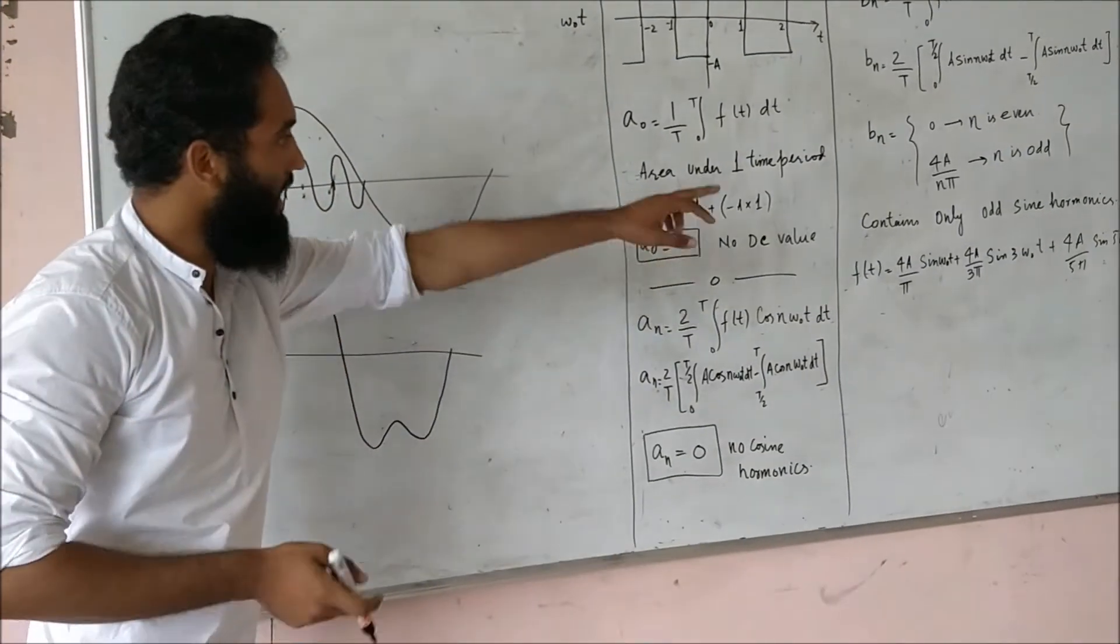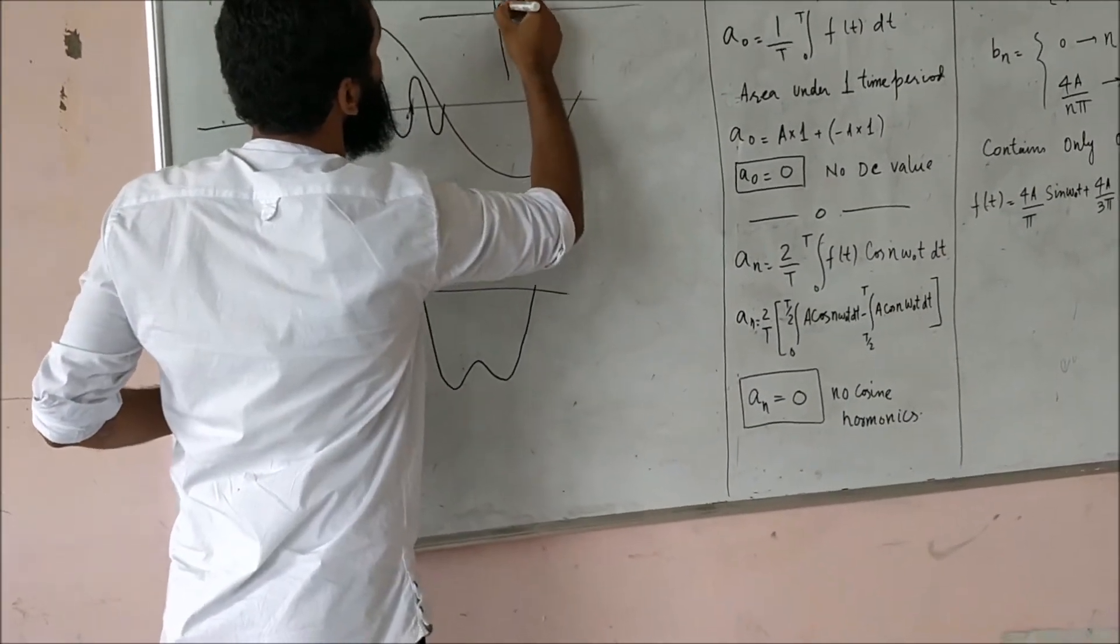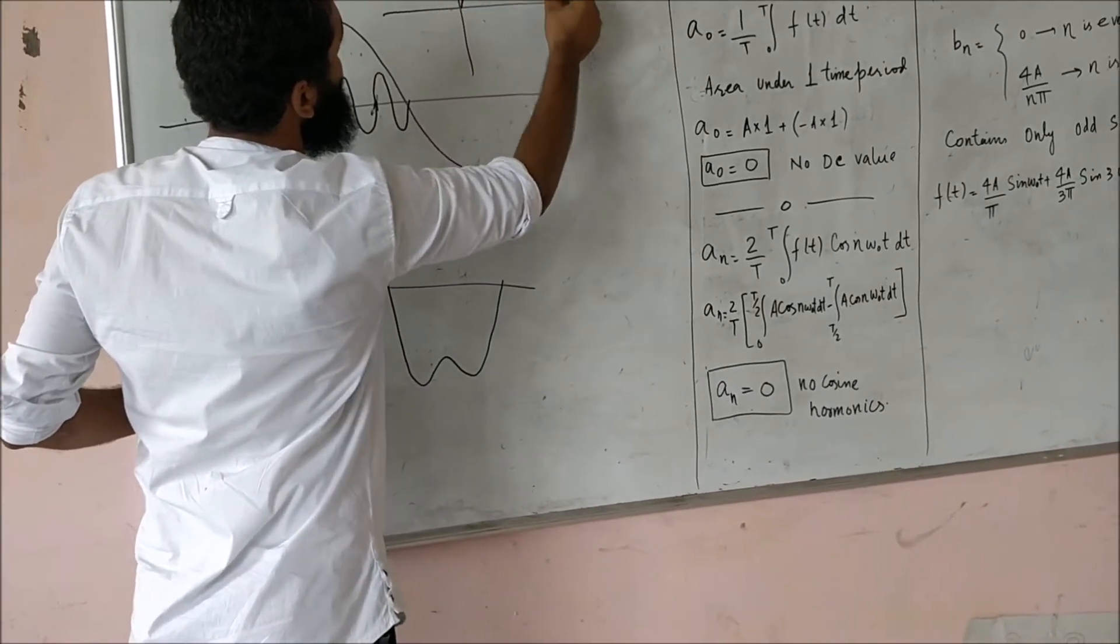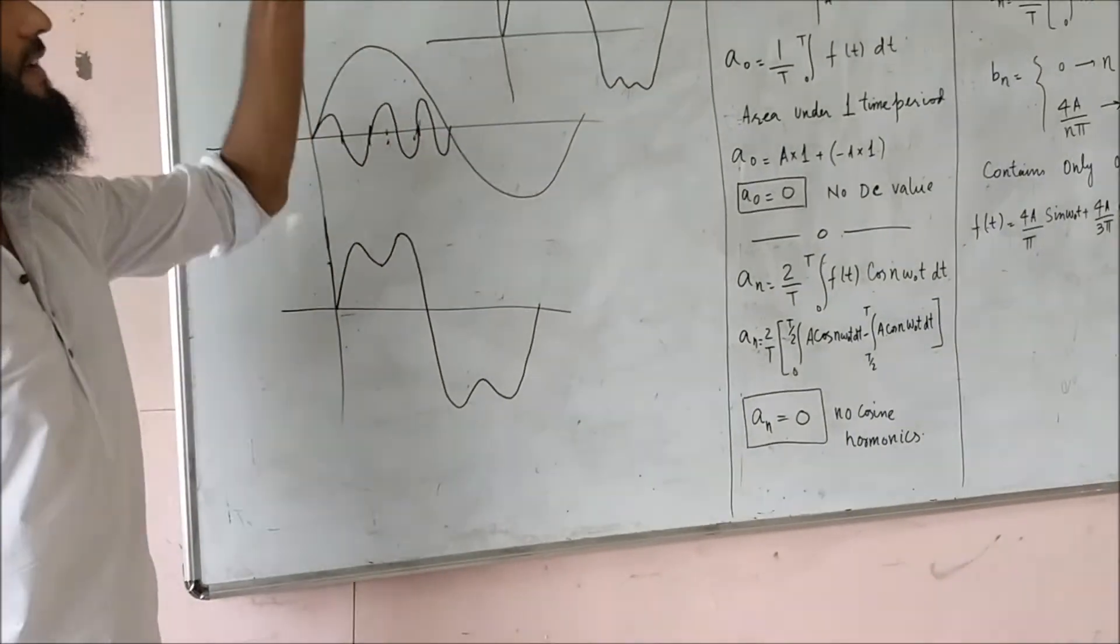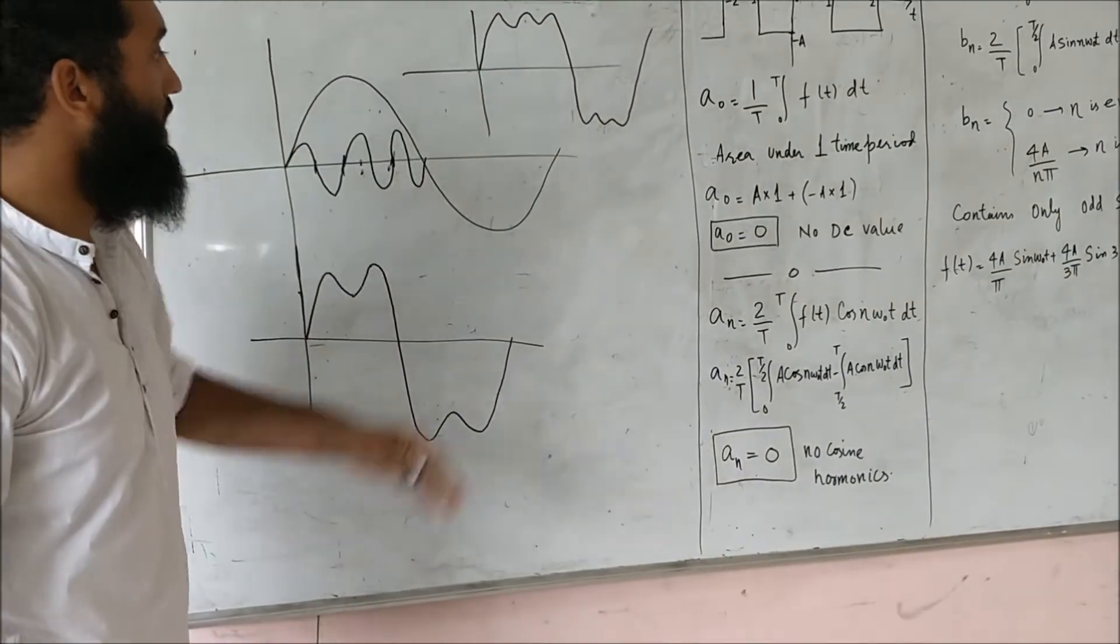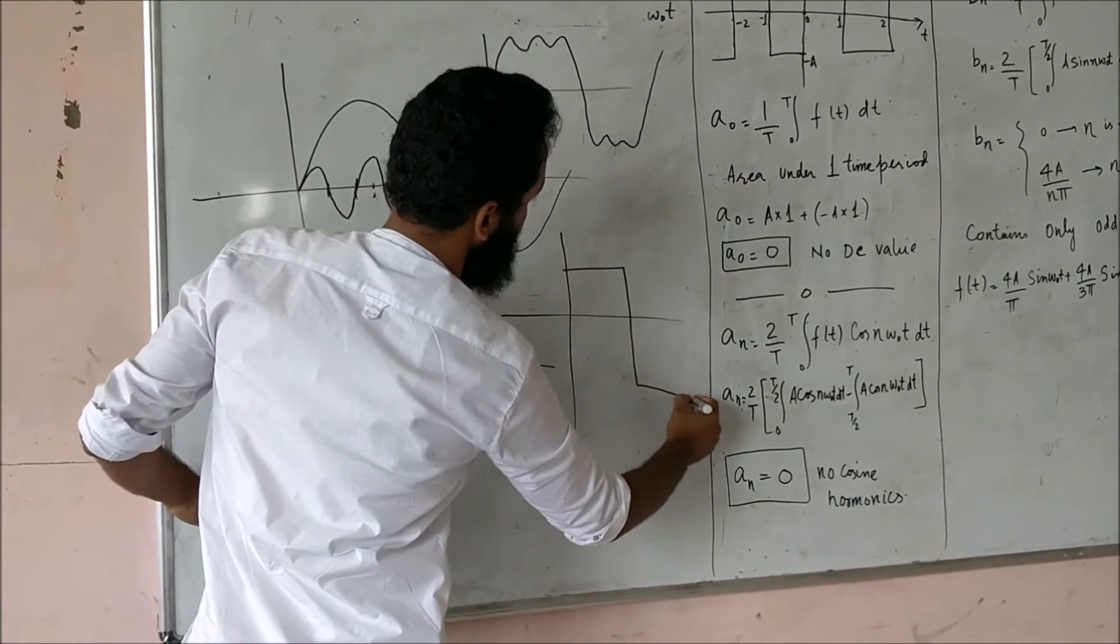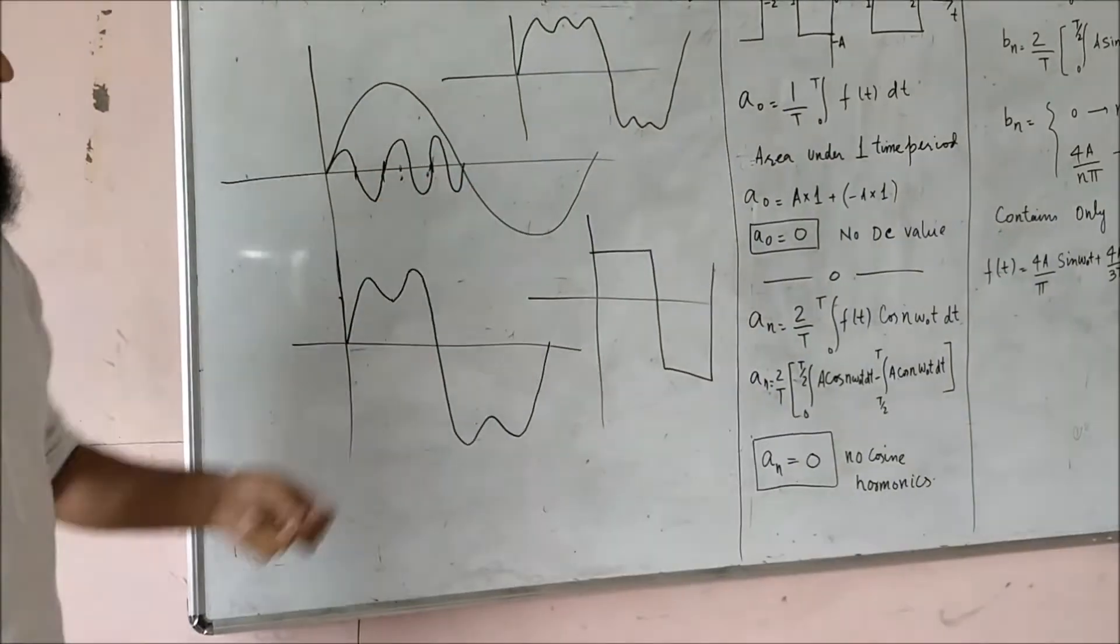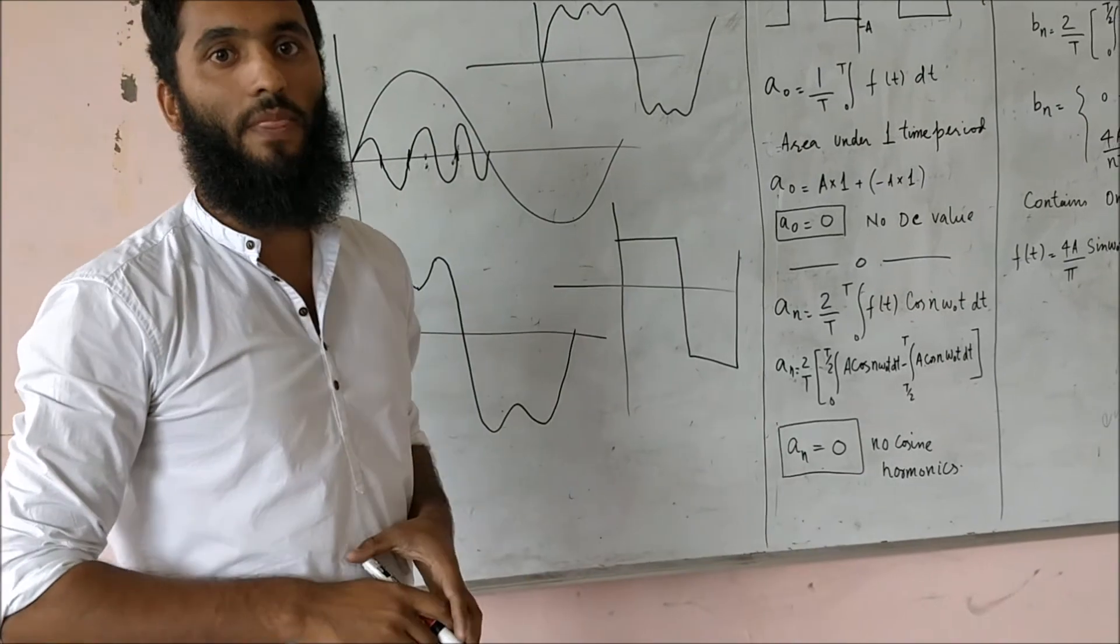If I add another harmonic to this wave, I will get a wave like this. Now, if I keep on adding infinite harmonics to this wave, I will get a final wave like this. Here I explained it in the physical interpretation that this happens.